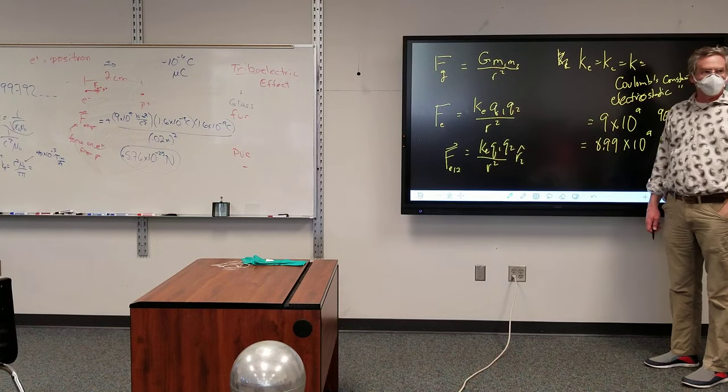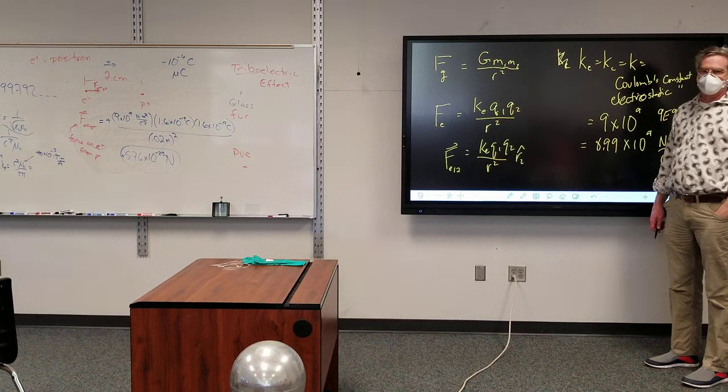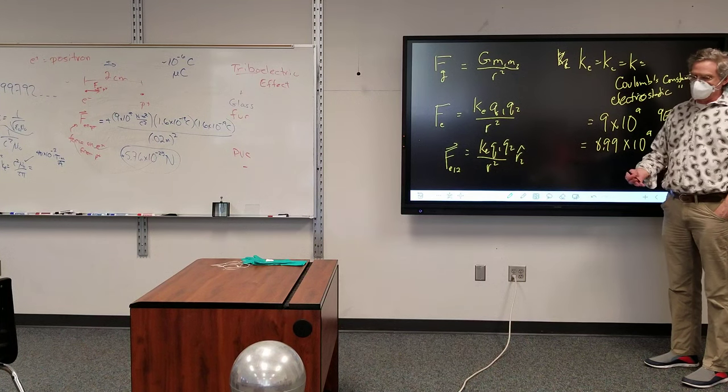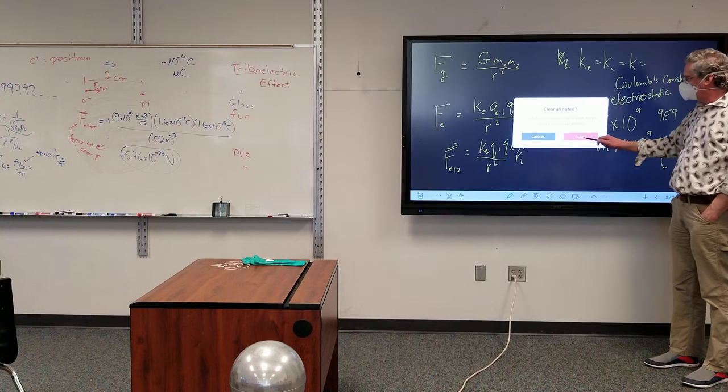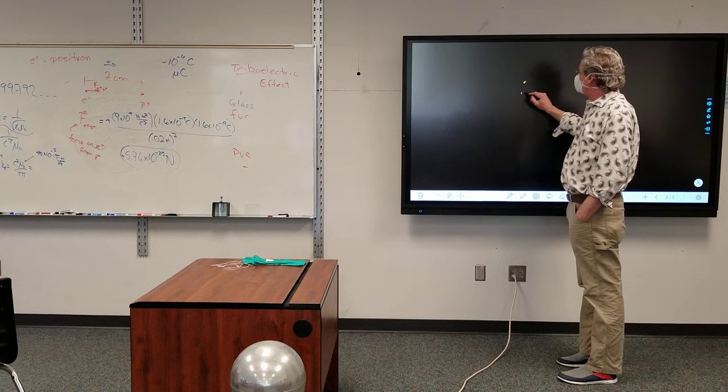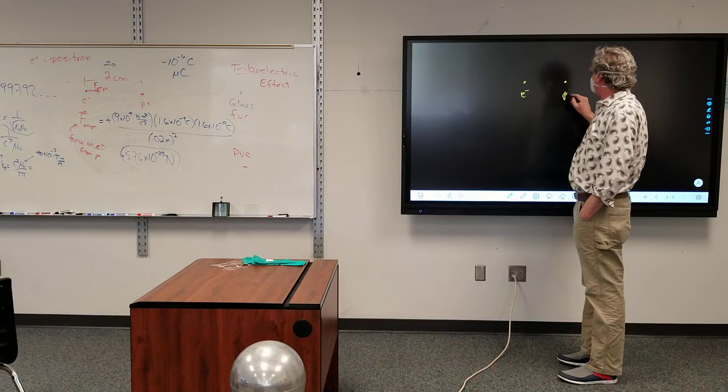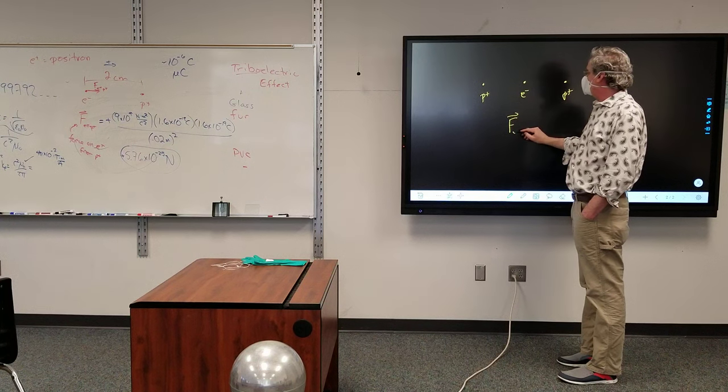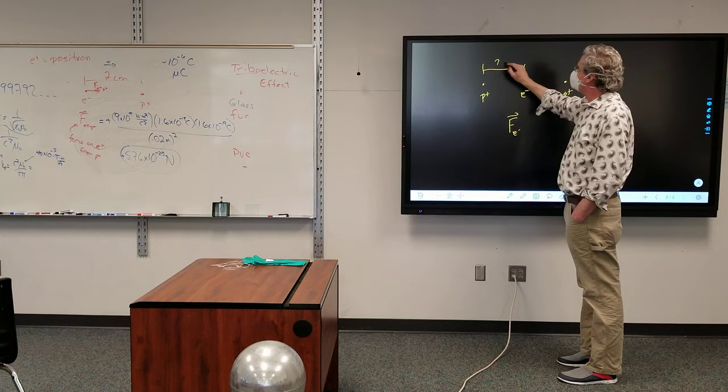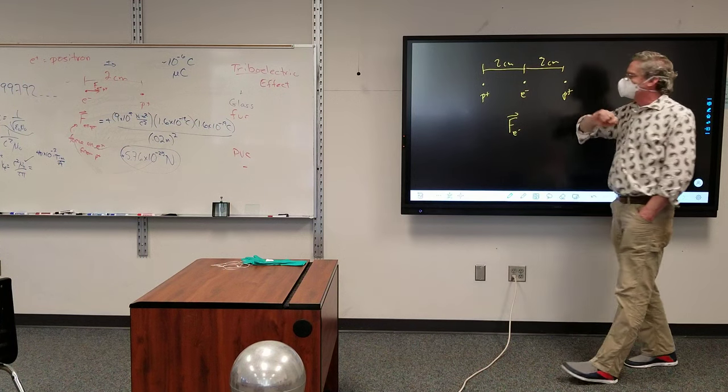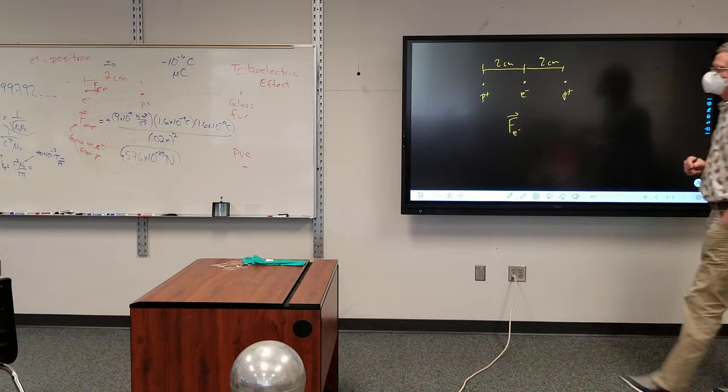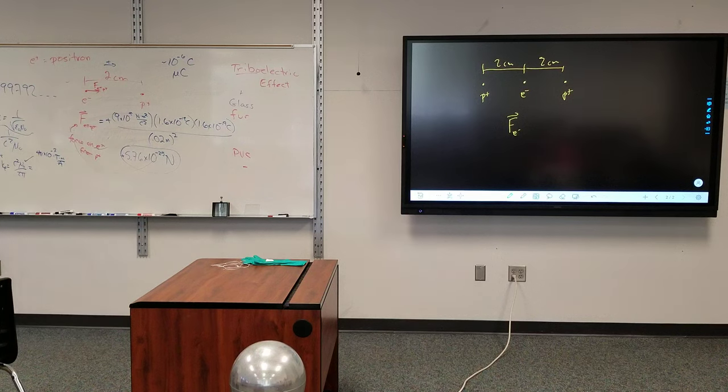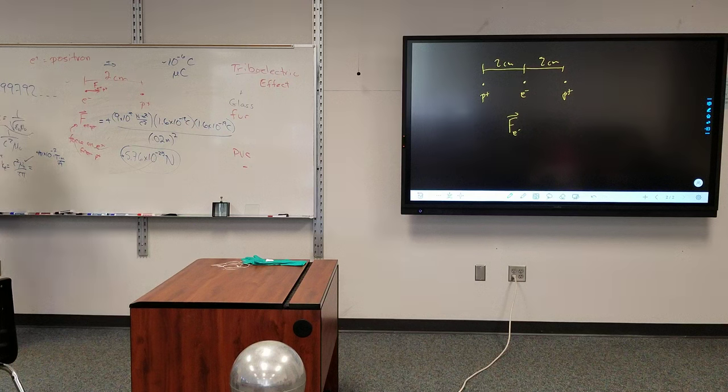All right, questions there before I throw one more problem out there? Problem that unfortunately messed up a bunch of people in 152 class. It was a test question with too many people missed. Hey, but we're in this class. I have an electron here. I have a proton here. And I have a proton here. If you know the answer, please don't blurt it out. I want to know the total force on the electron. And these are 2 centimeters apart there, and then 2 centimeters there. So the question is, what is the total force on the electron? Most of the math has already been done over here. So it doesn't require you pulling out a calculator, really.